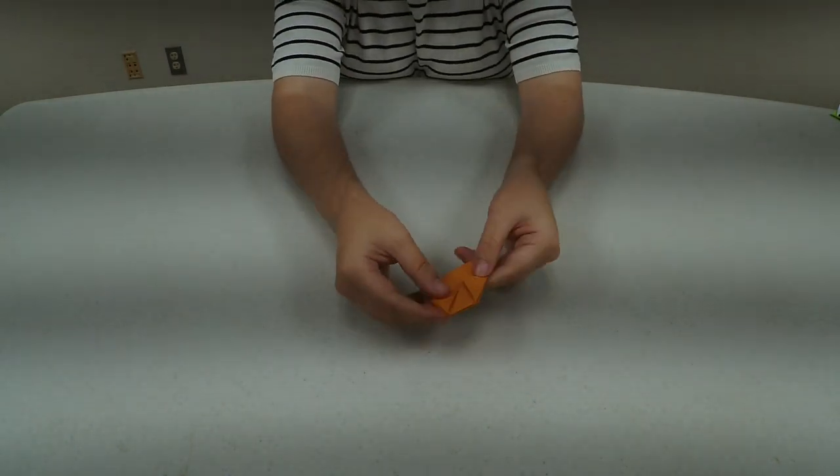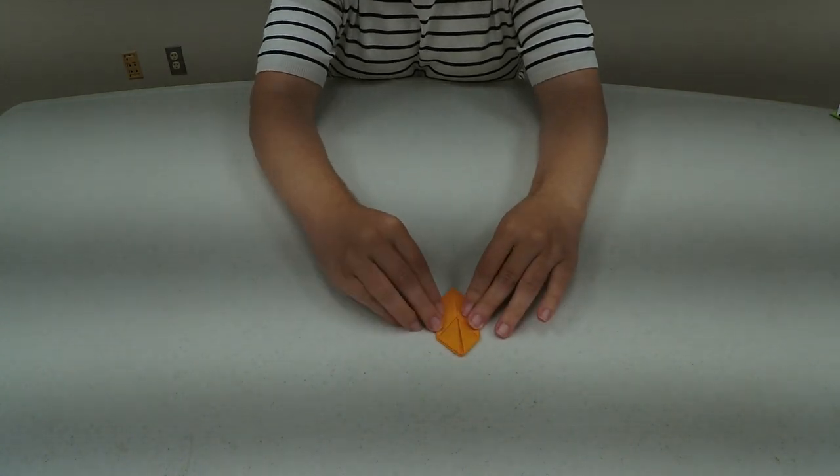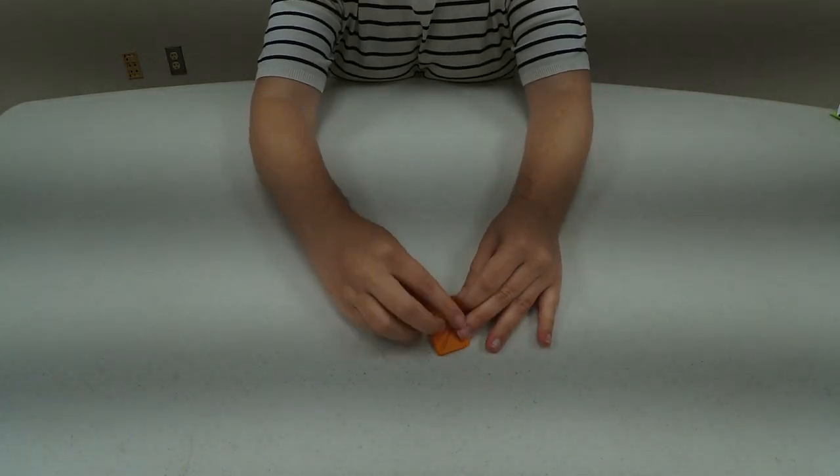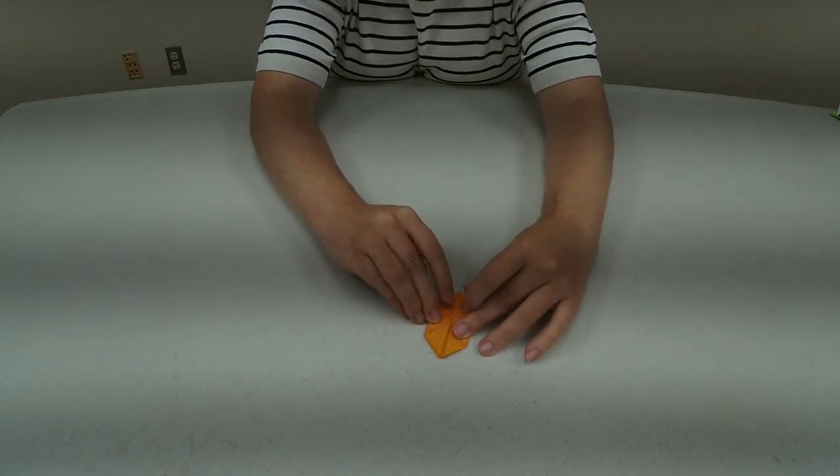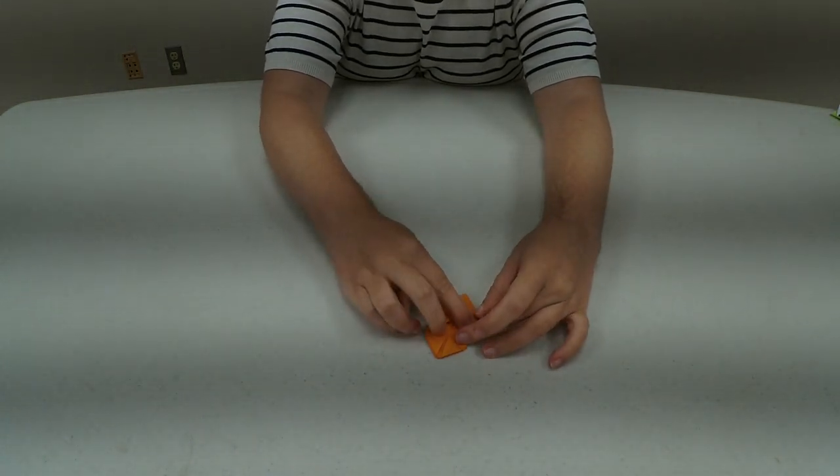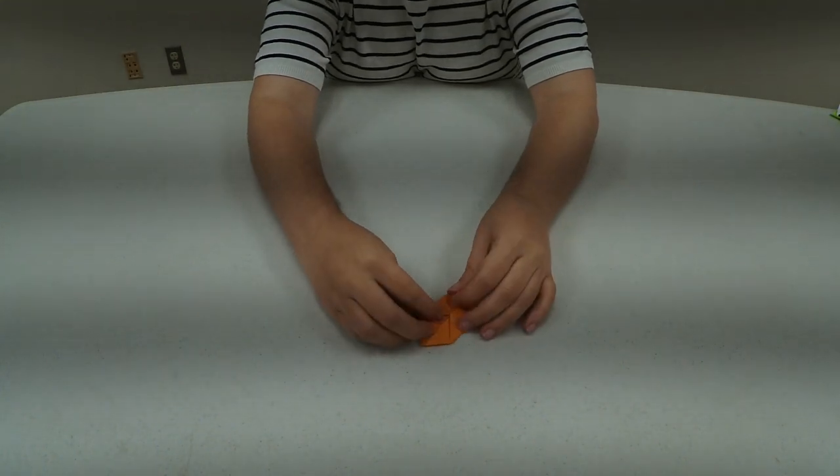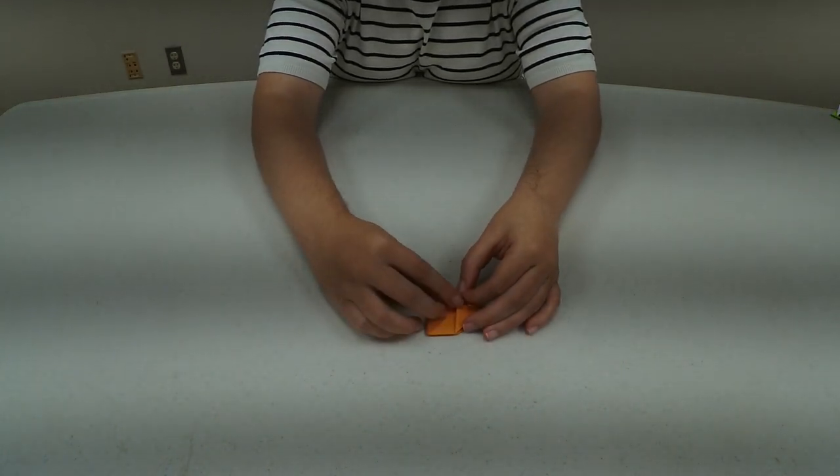And then you're going to turn it over and do the same on the other side. So you will fold these pieces down. And then you will fit them into the other flaps.